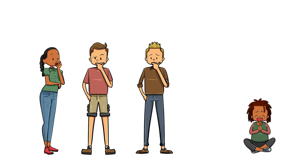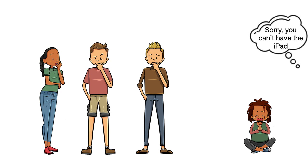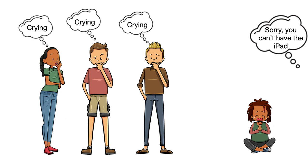Now, if you see that Justin is told he can't have the iPad and the behavior lasts for longer than 30 seconds, you know you should count this as an episode of crying. If you collect duration data for this behavior, you would start the timer as soon as Justin cried for 30 seconds and stop the timer as soon as 30 seconds passed without any crying.